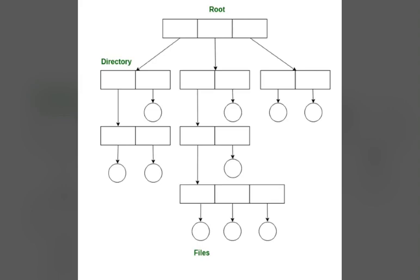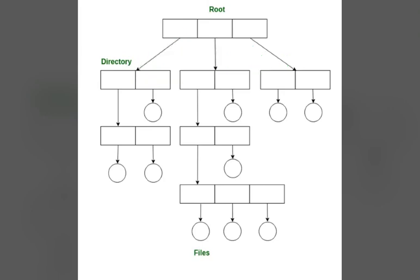For examination purposes, write that a tree structure is the most common directory structure. The tree has a root directory and every file in the system has a unique path. Generalization allows the user to create their own subdirectories and to organize their files accordingly.